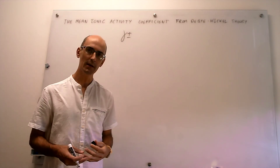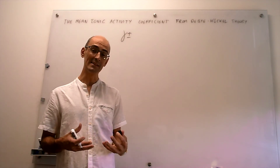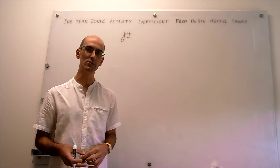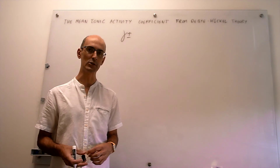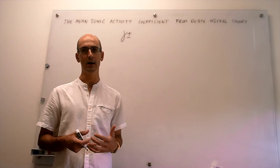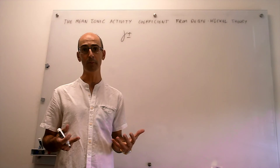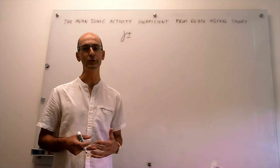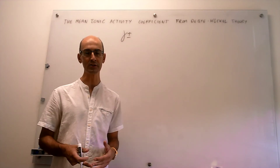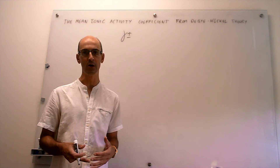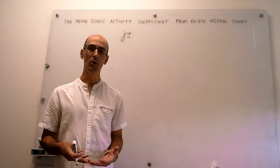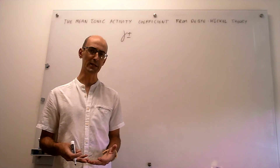The Debye-Hückel theory of electrolytes, at least the version we're going to see, has two main approximations. The first one is that when you have an ionic compound in solution, it fully dissociates — there's no partial dissociation. The degree of dissociation will be one, or a hundred percent.